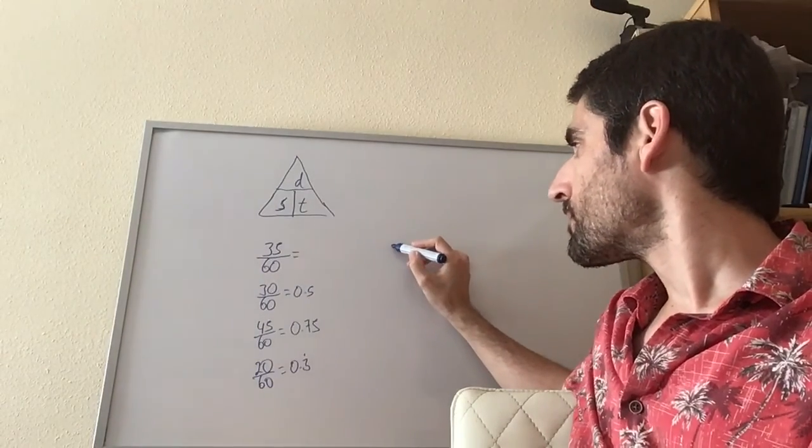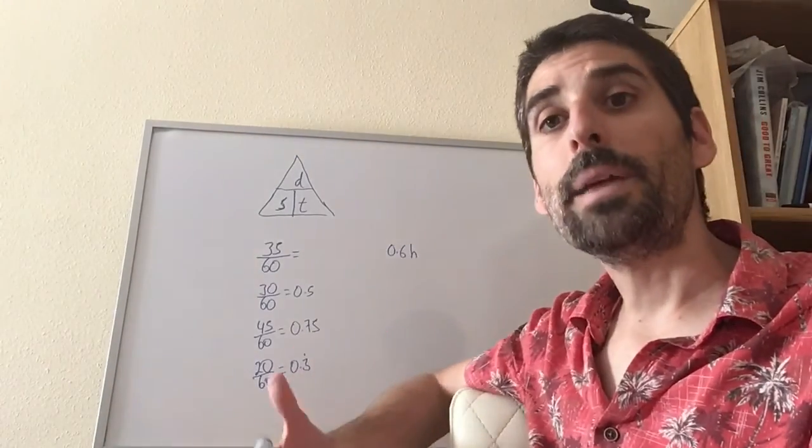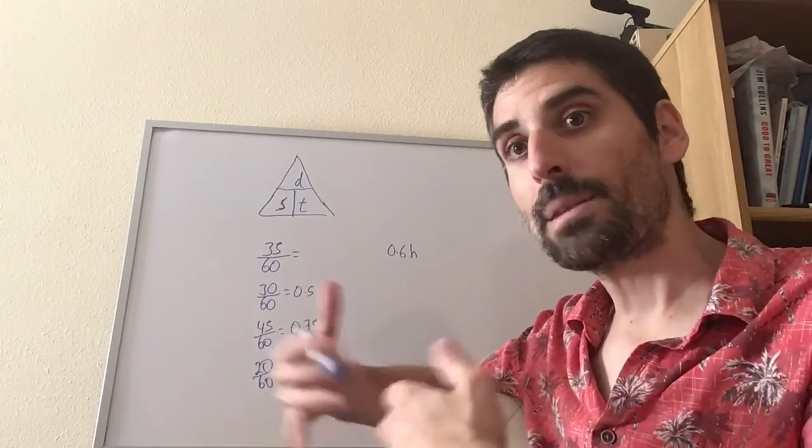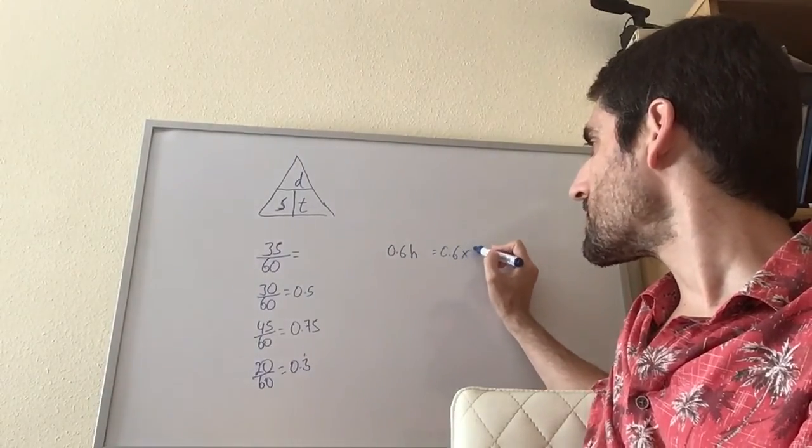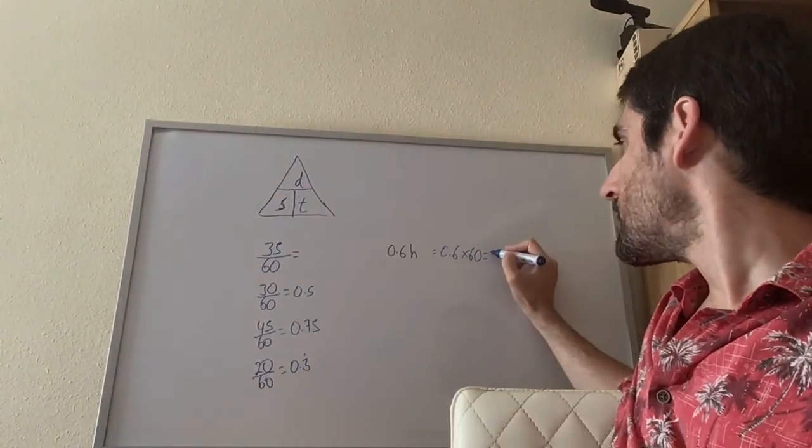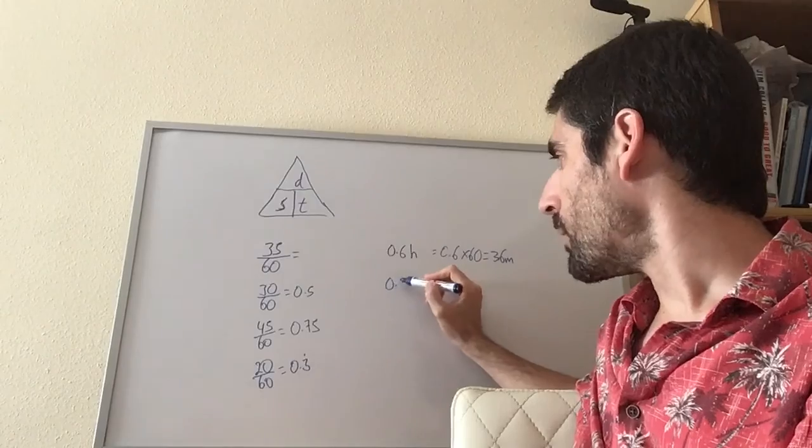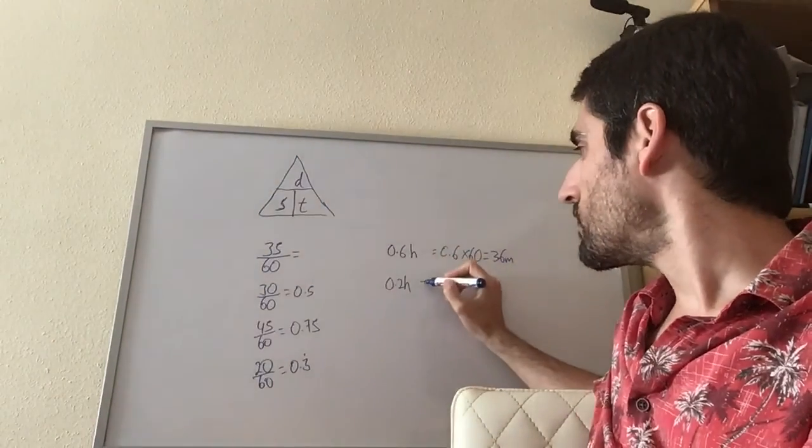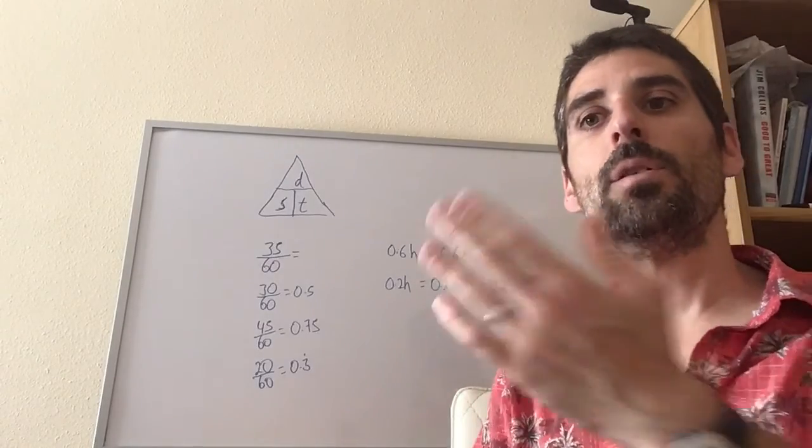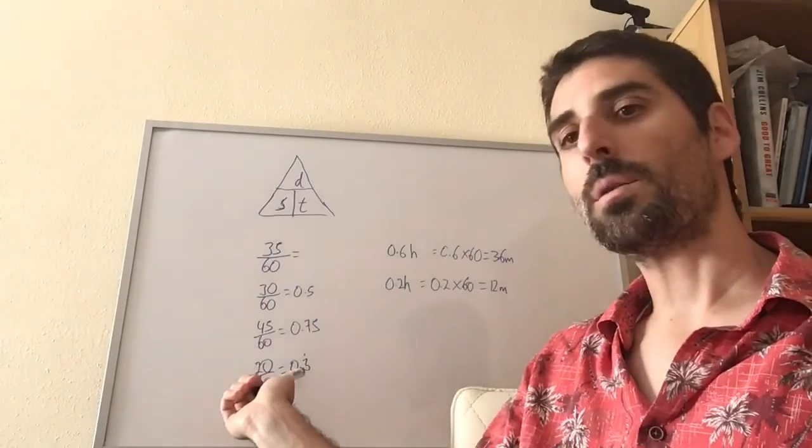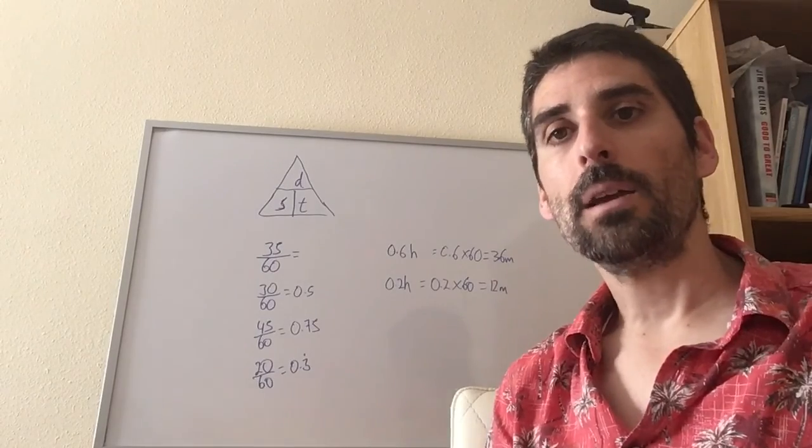Equally, the opposite—if you've got the time in hours and you need to change it into minutes, then you are going to simply multiply by 60. So say I've got 0.6 hours, well how many minutes is that? Well, here we do the reverse process, we multiply by 60. So 0.6 hours is the same as 0.6 times 60 because there's 60 minutes in one hour, so that's 36 minutes. If I've got 0.2 hours, well, it's going to be 0.2 times 60, which is 12 minutes.